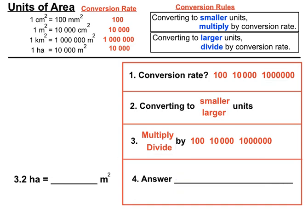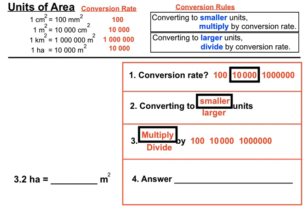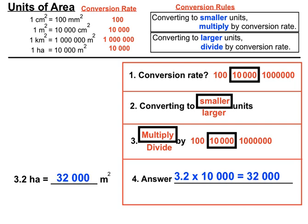Now for hectares: the conversion rate is 10,000, since every hectare has 10,000 square metres. Moving to smaller units, we multiply by 10,000 — moving the decimal point four places to the right. The answer is 32,000 square metres.